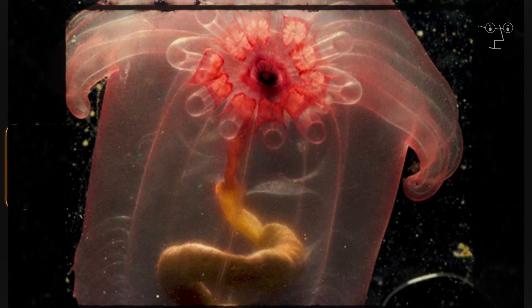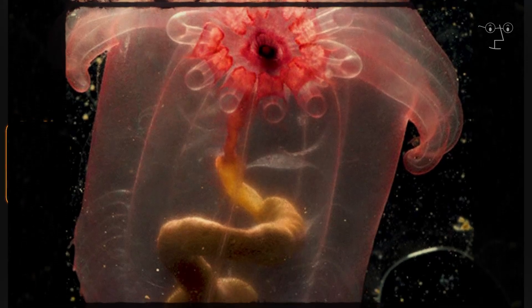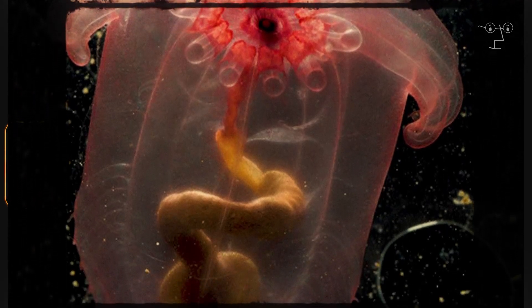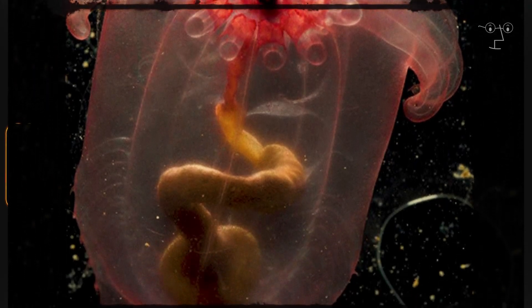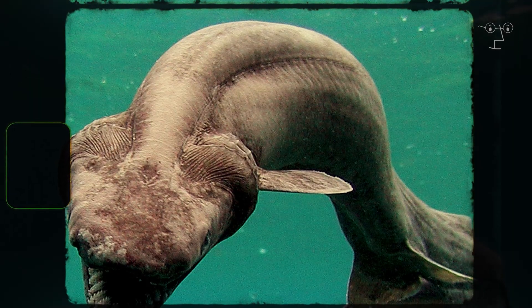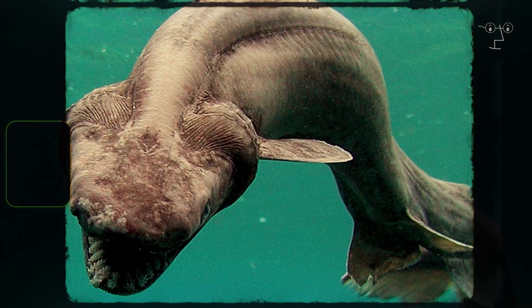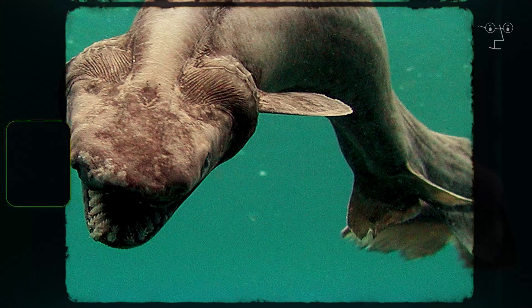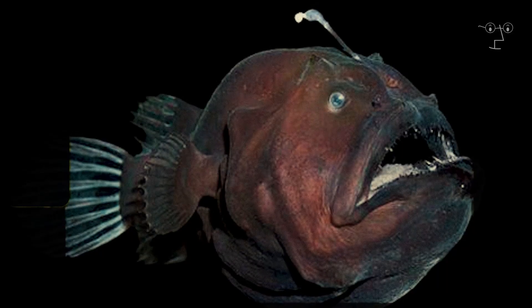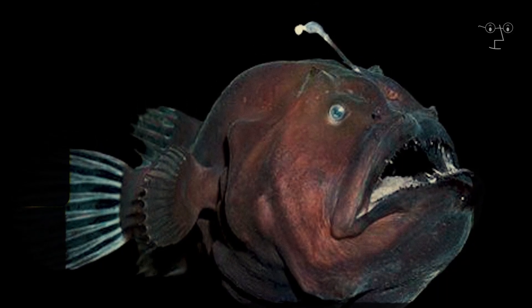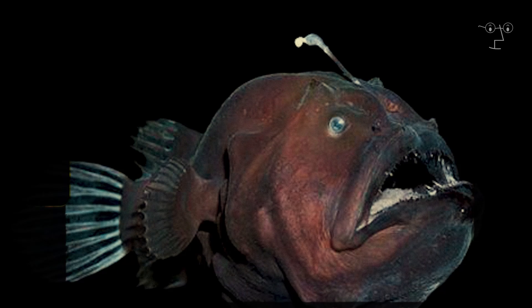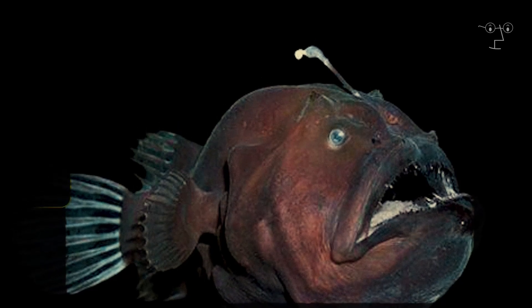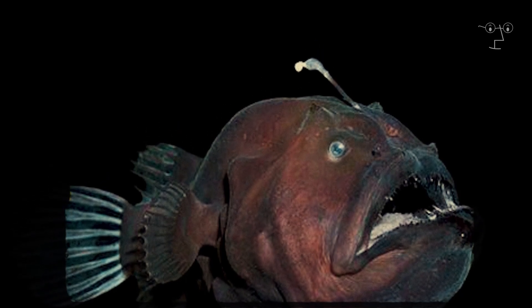On the other hand, the giant sea cucumber, which feeds on organic particles that settle on the ocean floor, demonstrates another form of adaptation. This invertebrate uses modified tentacles to capture food, making the most of the limited resources available. Its ability to absorb nutrients from organic debris and decaying matter illustrates a biological efficiency that allows it to survive in an ecosystem where few can prosper.